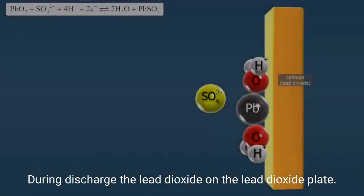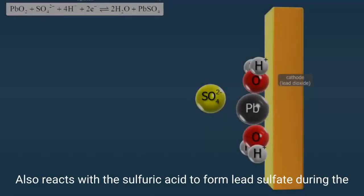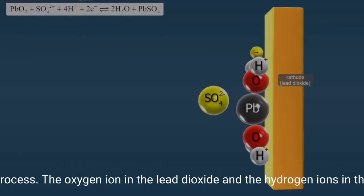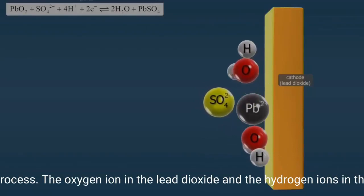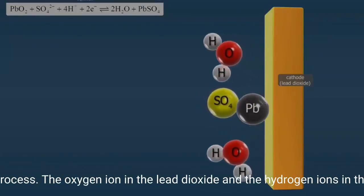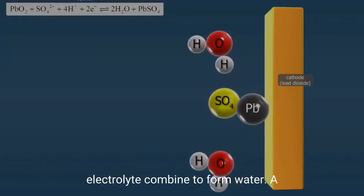During discharge, the lead dioxide on the lead dioxide plate also reacts with sulfuric acid to form lead sulfate. During this process, the oxygen ion in the lead dioxide and the hydrogen ions in the electrolyte combine to form water.